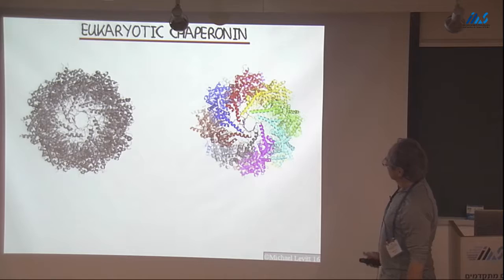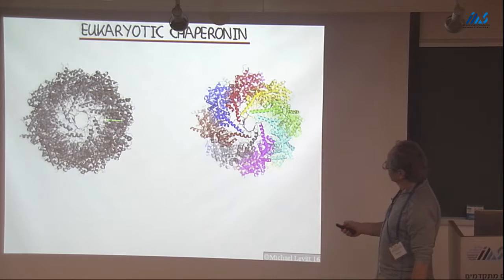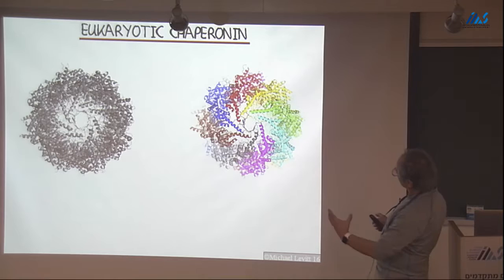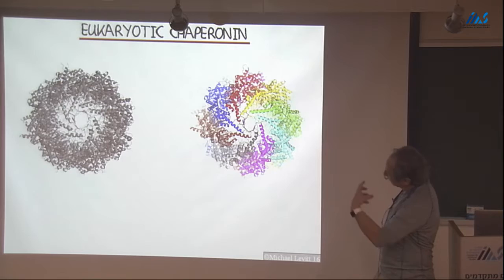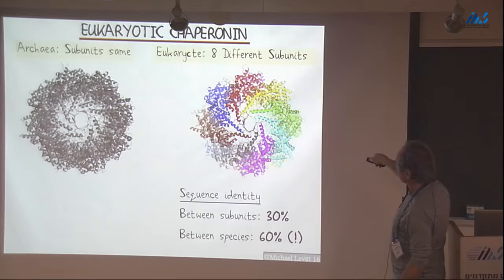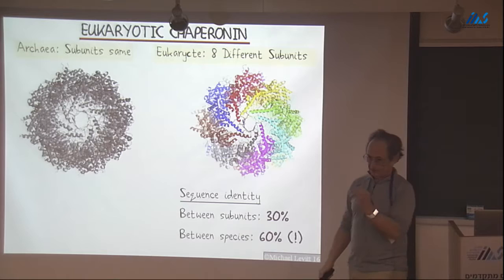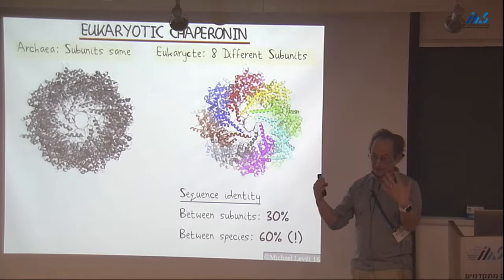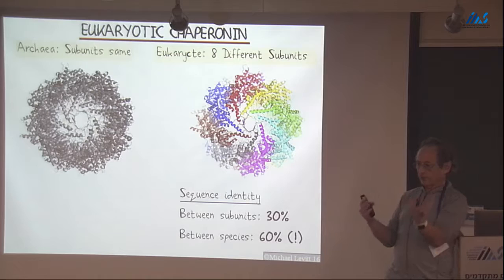Eukaryote chaperonins have eight subunits. The overall shape is extremely similar, but you suddenly have eight genes because you have eight different subunits - you've got to have eight genes for an object that managed perfectly well with one gene. The different colored subunits are about 30% identical to each other, almost as much as they are identical to the archaea, but all the blues are 60% identical across species. So you have to consider these colors are not just there by chance - each one is doing something special. We don't even understand really how chaperones work at all.